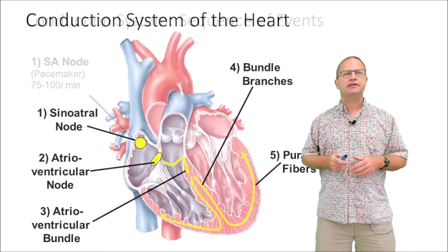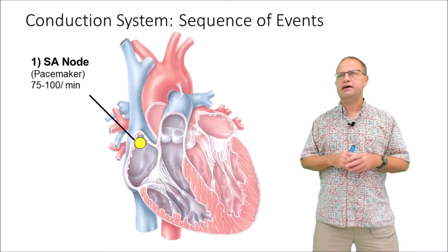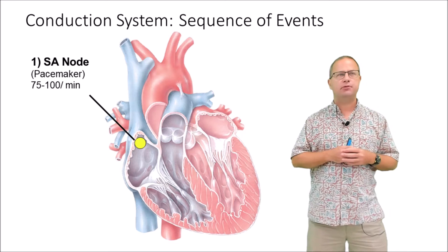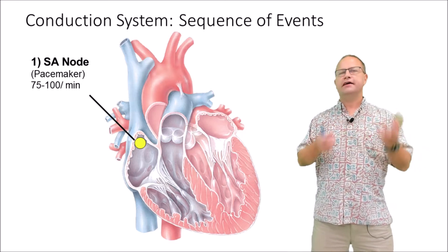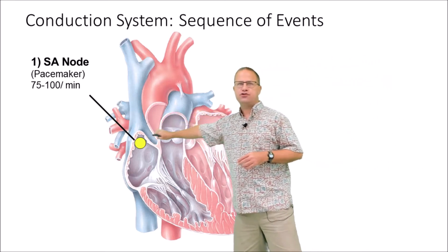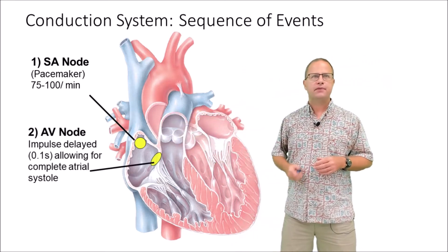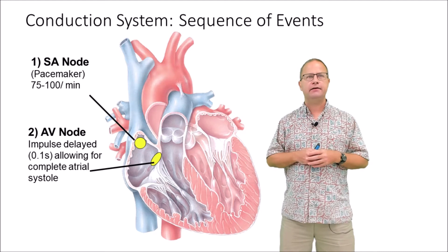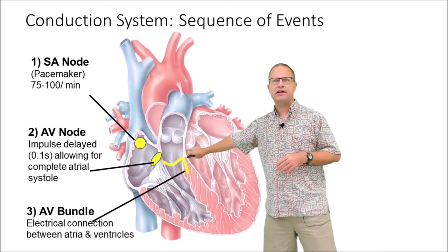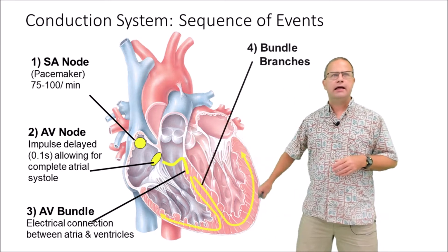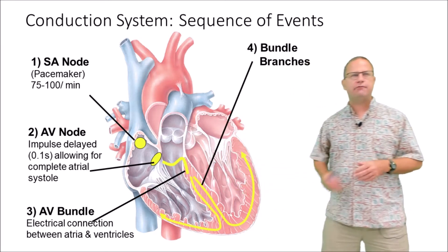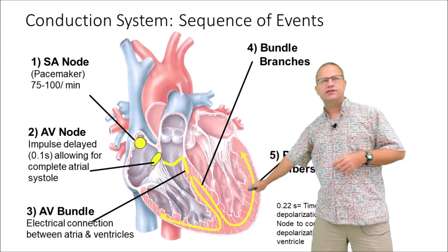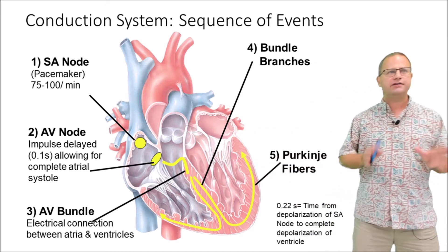Let's go through the sequence of events. The SA node depolarizes — that's usually around 90 to 100 times per minute and can be modulated through our vagus nerve. That depolarization travels down the right atrium and reaches our AV node or atrioventricular node, where there is a delay of about one-tenth of a second. Then that depolarization is transmitted by the AV bundle and down the left and right bundle branches through our interventricular septum, and then transmitted up the outside of our ventricles by our Purkinje fibers.